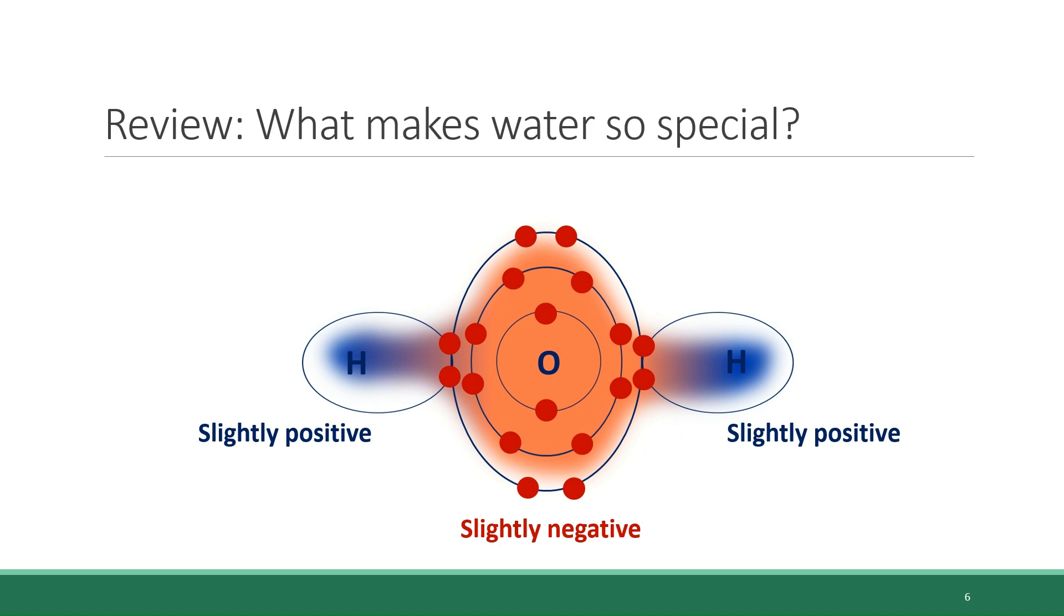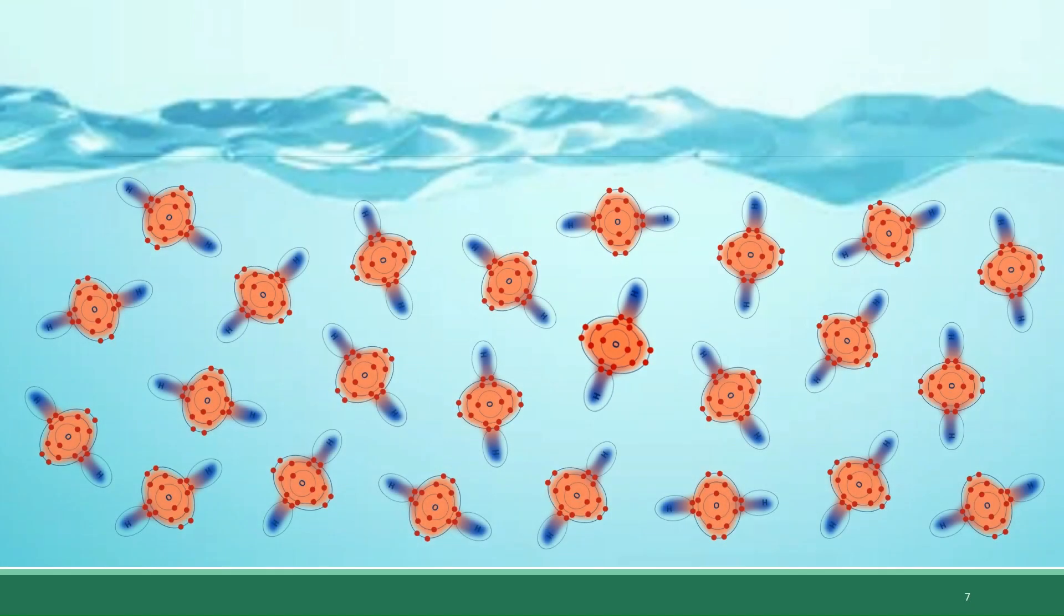In our previous look at water, we explained how when you have a sample of water, you're talking about a large number of molecules in that sample that are interacting with each other. Due to the fact that each of these water molecules has positive ends and negative ends within its structure, there is a network of attractions between the hydrogen of one molecule and the oxygen of a separate molecule, represented here by the yellow dotted lines.